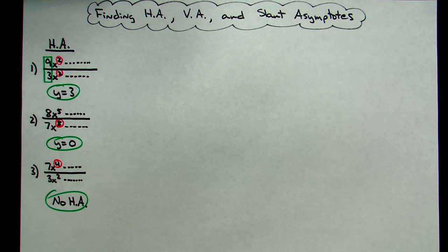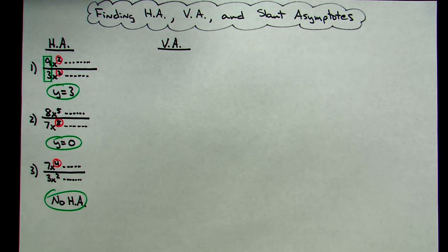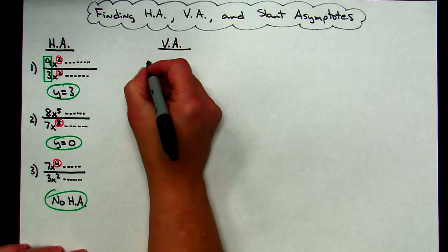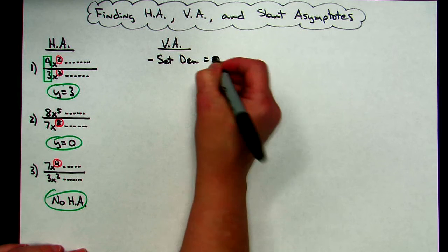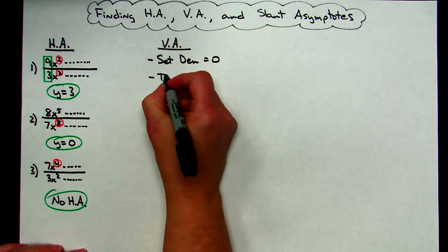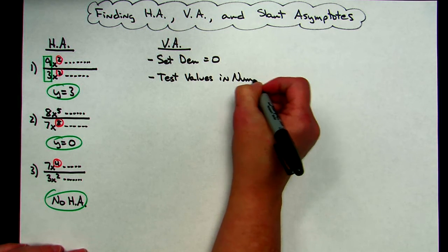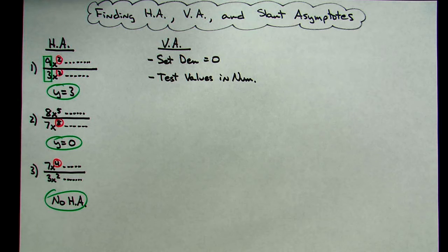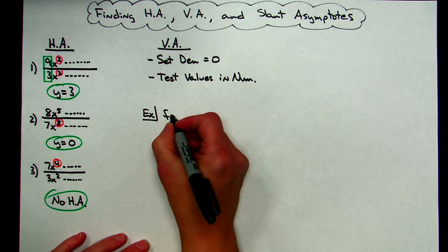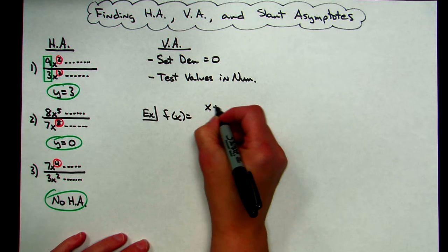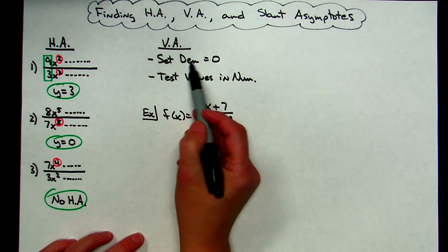Alright, now let's take a look at vertical asymptotes. Again with rational functions. Now I'm going to set some rules up for this one, and then we'll actually work an example on this one. You need to remember to set your denominator equal to 0 and solve, and then you need to test those values in the numerator, because if they make the numerator equal to 0, then we are going to exclude them. So as an example, I might have some rational function f of x equals x plus 7 over x squared minus 49. Now our rules say set the denominator equal to 0, test the values in the numerator.